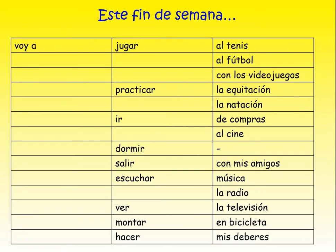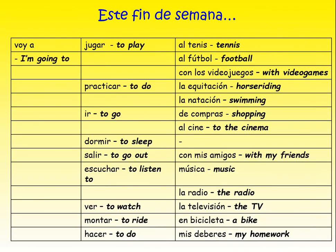Here are a few phrases you could use when writing about your free time using 'voy a' - I'm going to - with a variety of verbs and activities. Pause the video and write down any vocabulary you still don't know or that's been new for you today in Spanish and English. The English will come up shortly so you can check. These verbs go with 'jugar', these with 'practicar', these with 'ir', and so on. Make sure you've got a good bank of vocabulary ready for writing about your own free time.